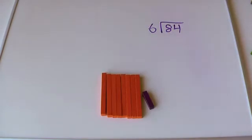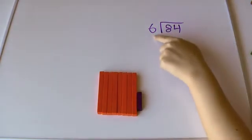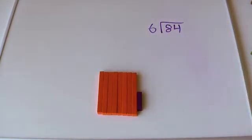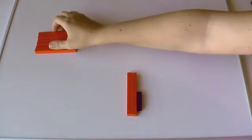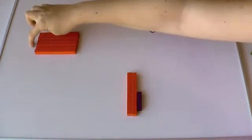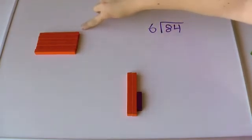84 divided by 6. So here's 84. It is not in a rectangle with 6 on one side, is it? I want to make it into a rectangle with 6 on one side. So the first thing I see that I can easily do is take out 6 tens and move them here. So now I have 1, 2, 3, 4, 5, 6 on that side. And I have 10 here.